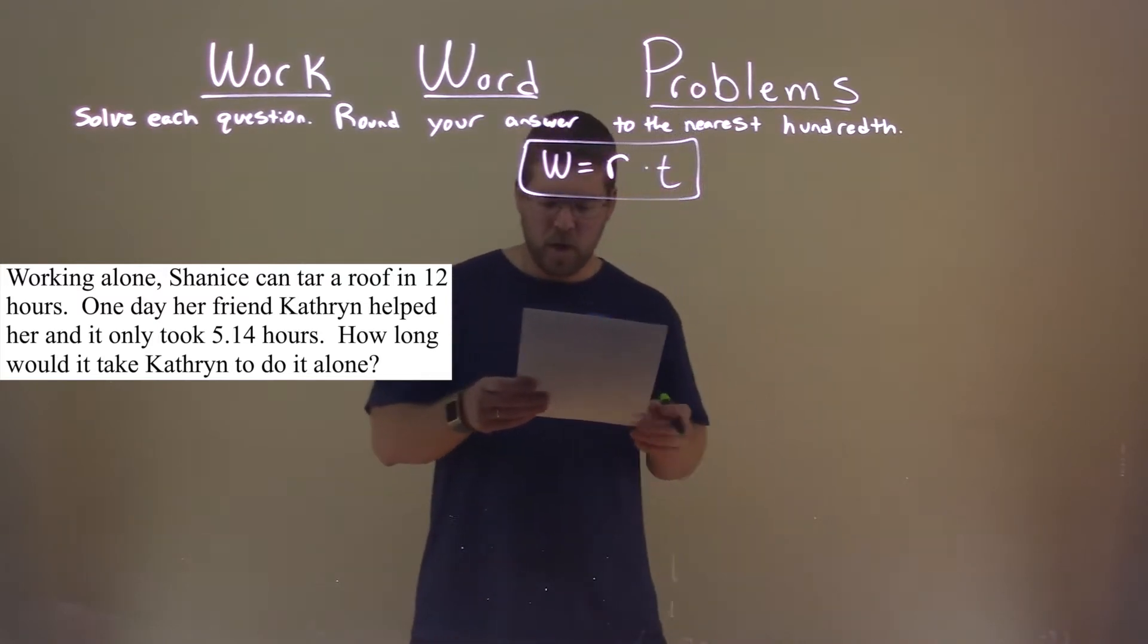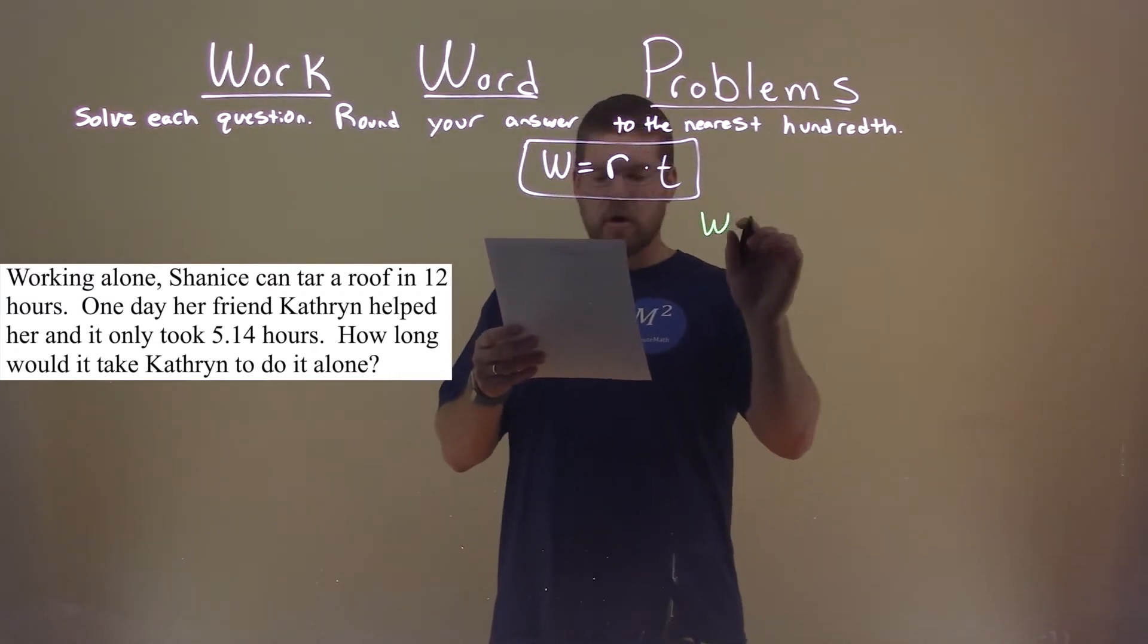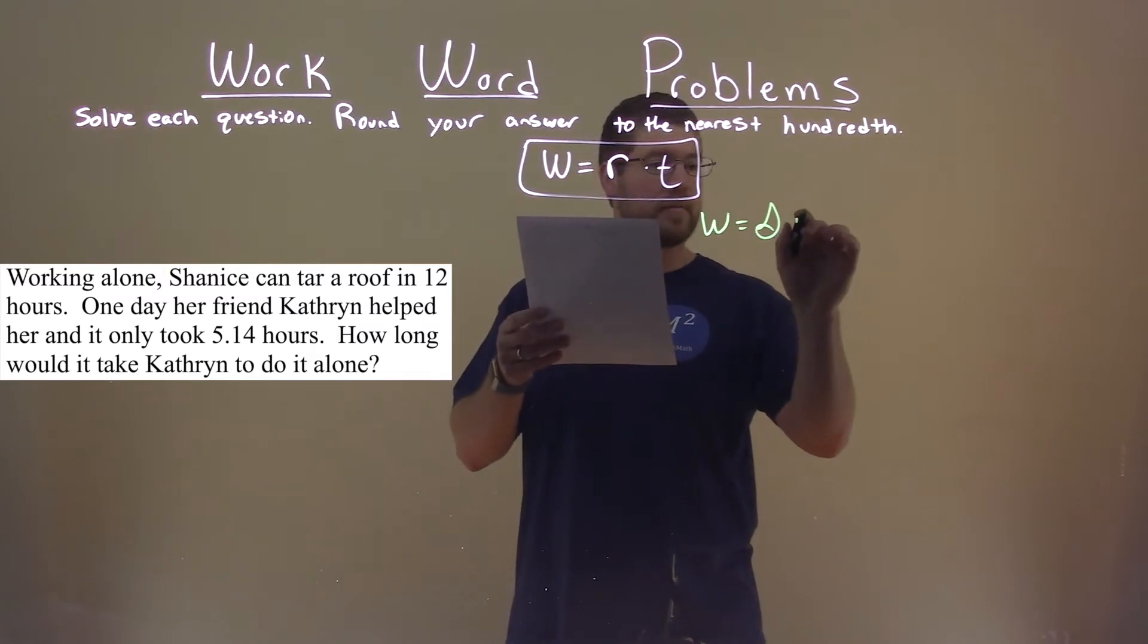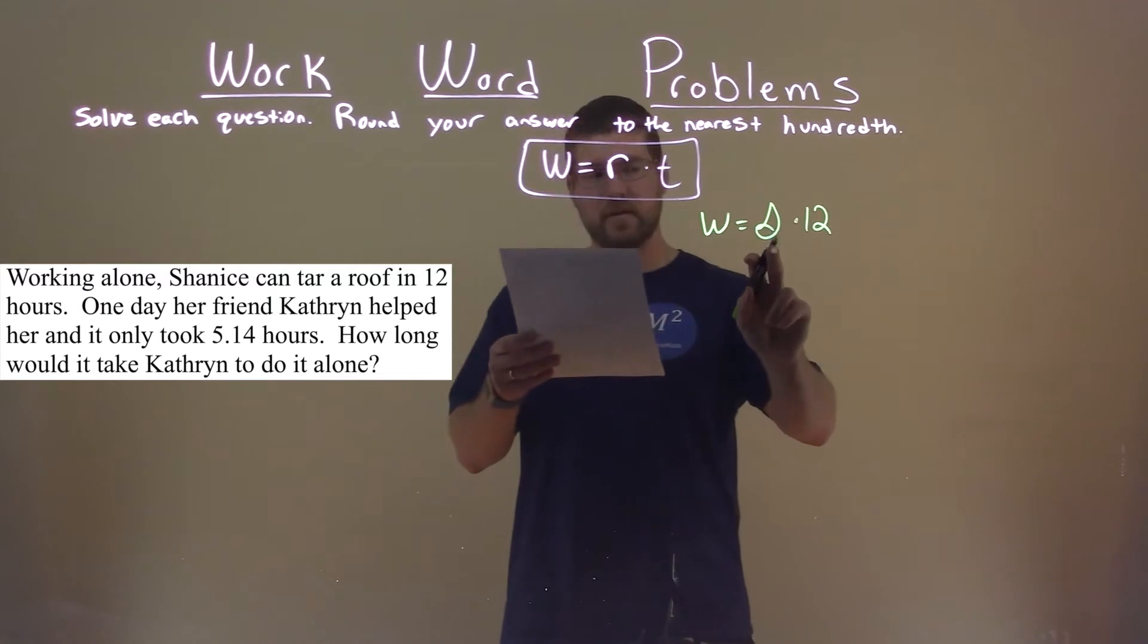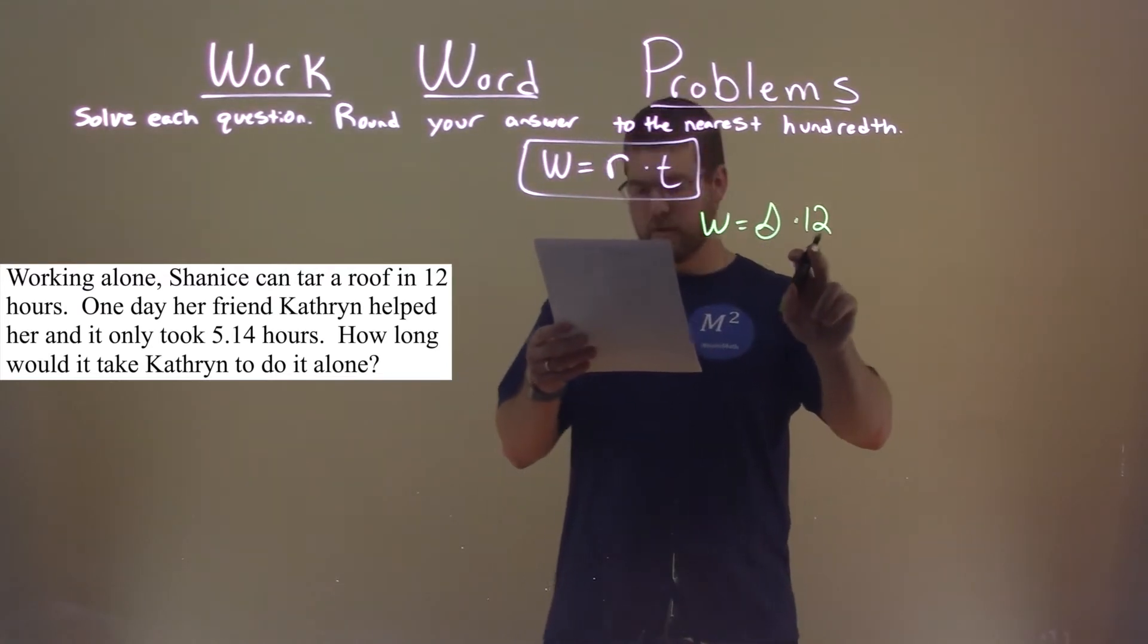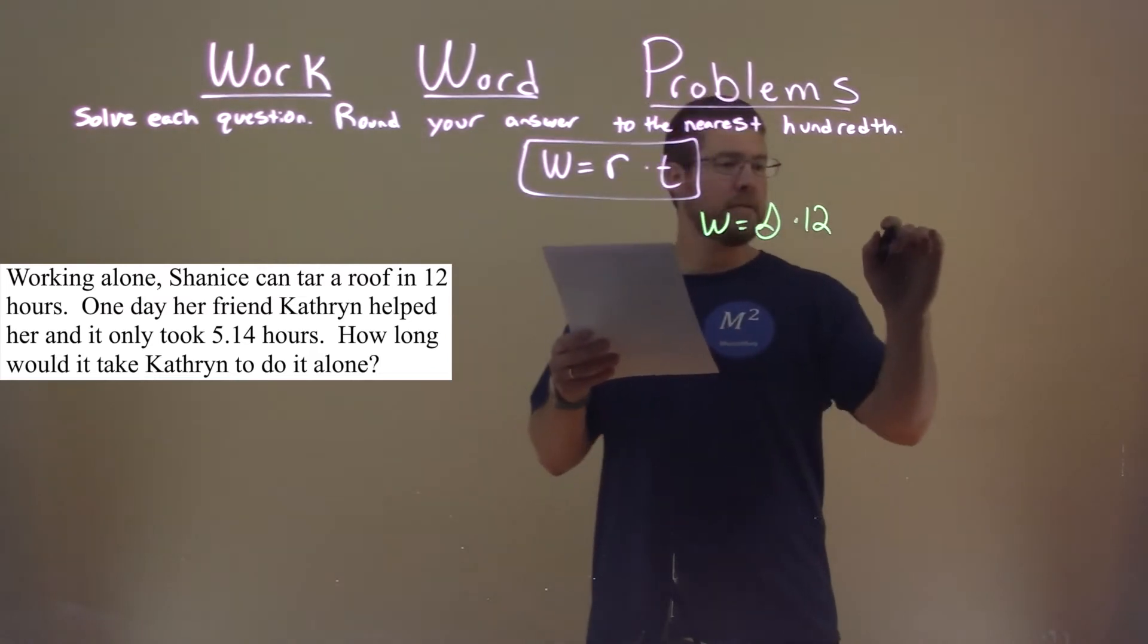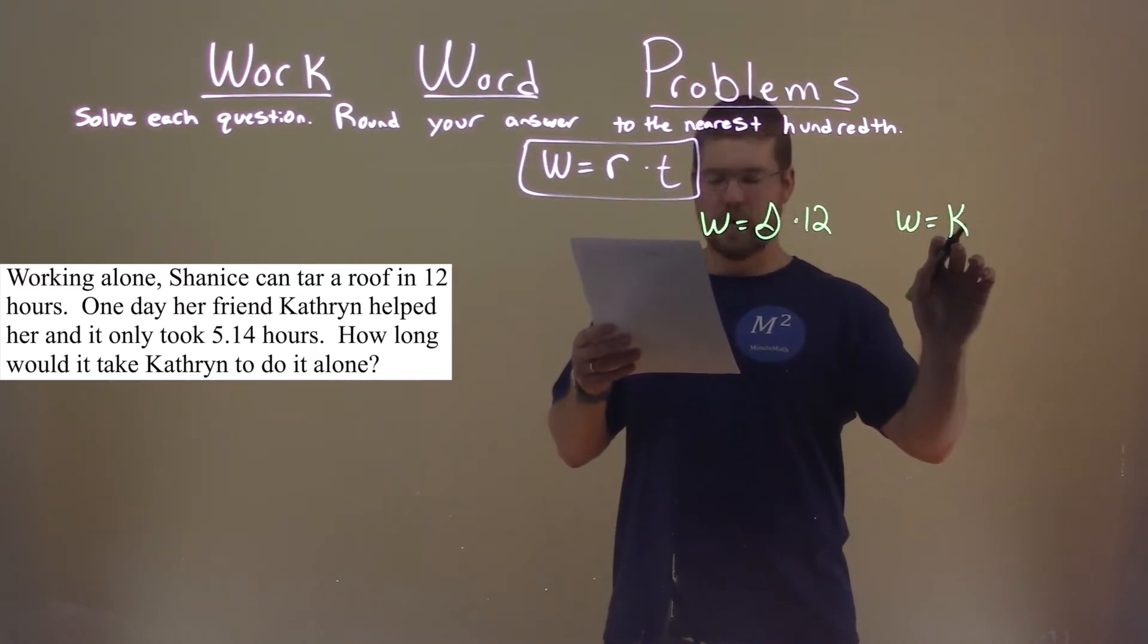So let's write down what we know. The work done of tarring the roof takes Shanice a total of 12 hours. So the work done times Shanice's rate times 12 hours. Then her friend Catherine, her work rate, we can call it variable k, her work rate, and then times time. We don't know what those are.